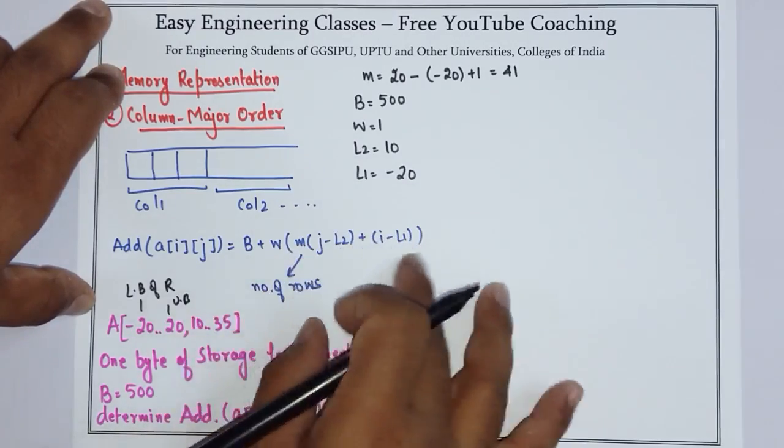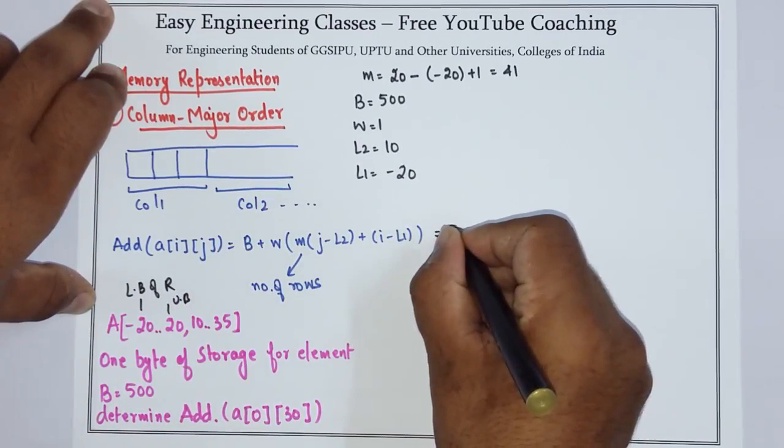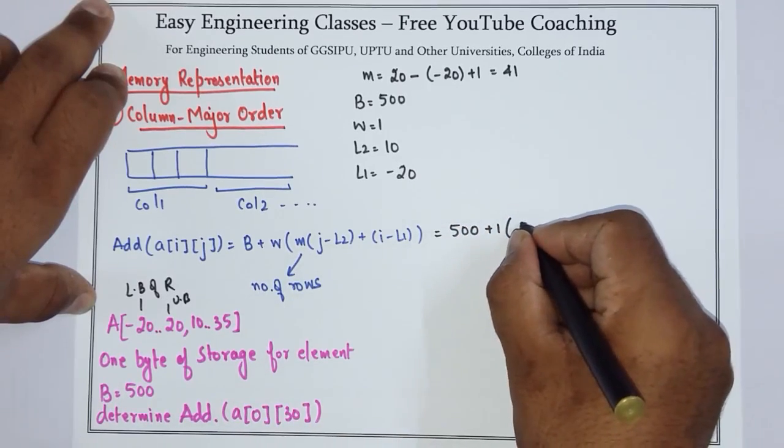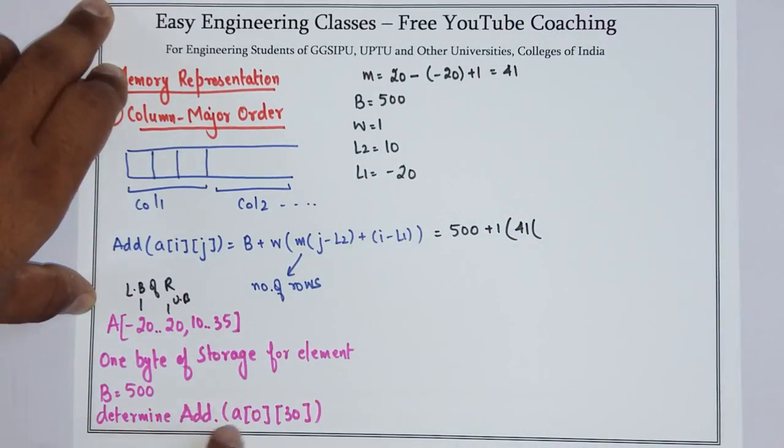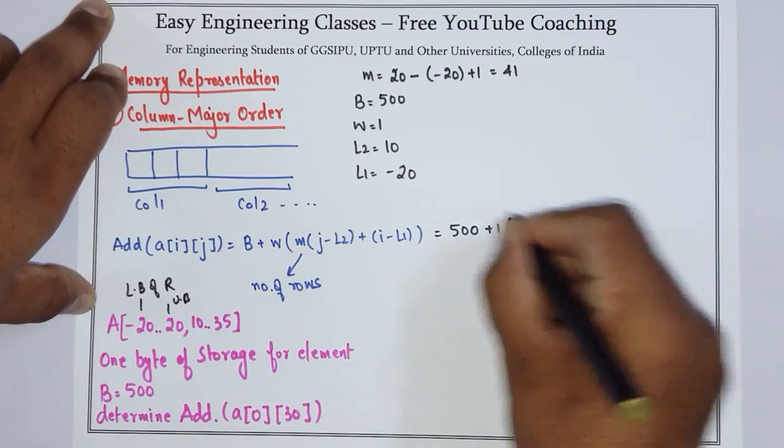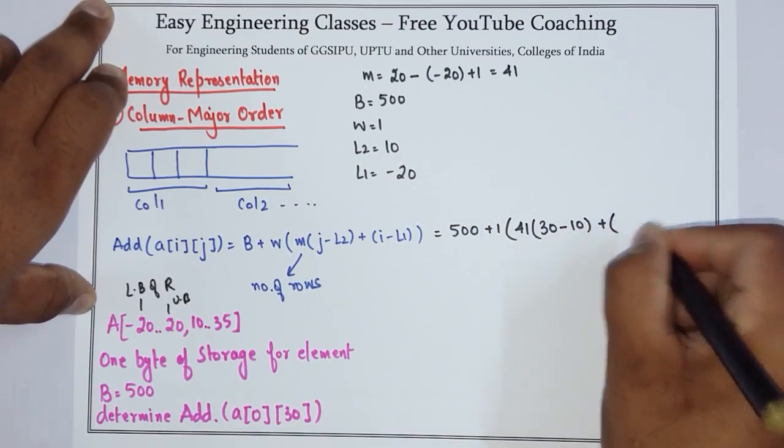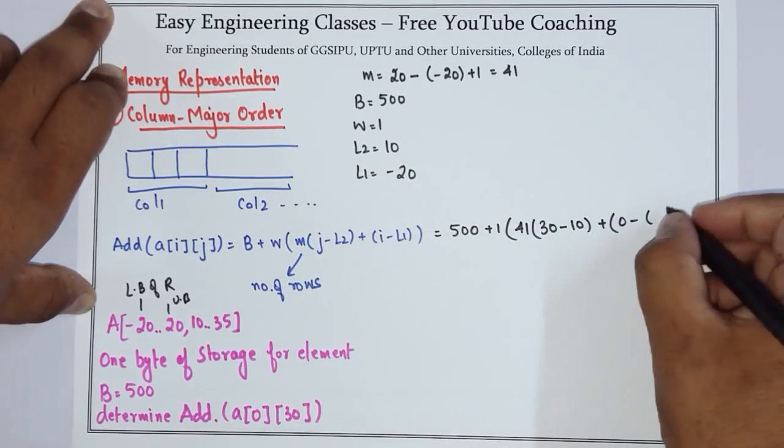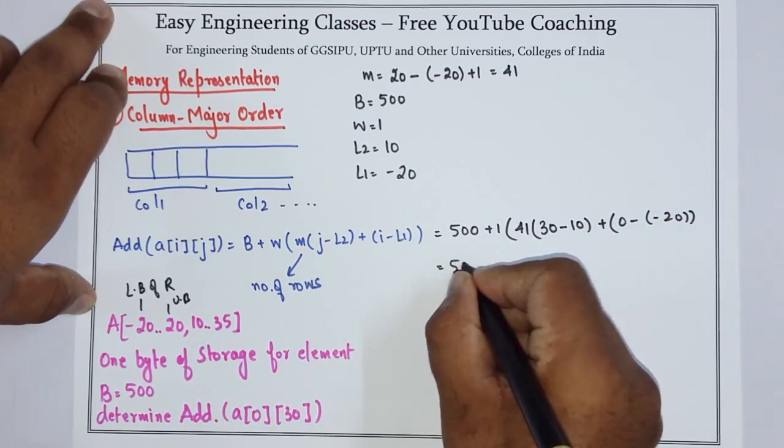Values of the variables in this equation. So now put all the values in the equation. We will get 500 plus 1 times 41 times (j is 30, so 30 minus l2 which is 10) plus (i is 0, so 0 minus l1 is -20, so 0 minus -20). Solve this equation.